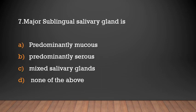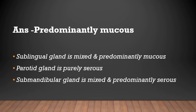The sublingual salivary gland is predominantly: mucus, predominantly serous, mixed, or none of the above? The answer is predominantly mucus. The sublingual gland is mixed and predominantly mucus. The parotid gland is purely serous, and the submandibular gland is mixed and predominantly serous.